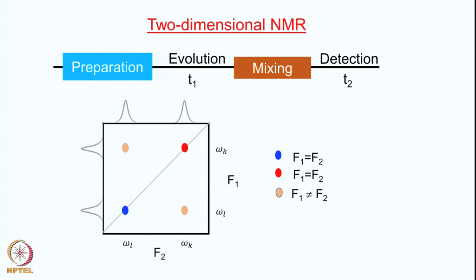If you have to do signal averaging, you do so for each value of T1, starting with 0, then 1 delta T1, 2 delta T1, 3 delta T1, and so on. You collect a large number of FIDs — as many as the increments used in the evolution period. Then you do a Fourier transformation: first along the F2 dimension, then along the F1 dimension.